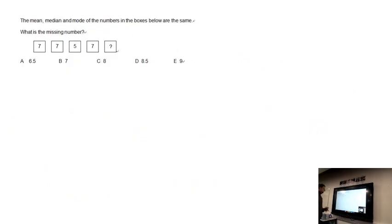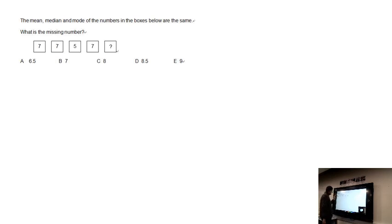For this question we have the mean, median, and mode of numbers in boxes that are all the same. It looks like the mode is going to be seven.